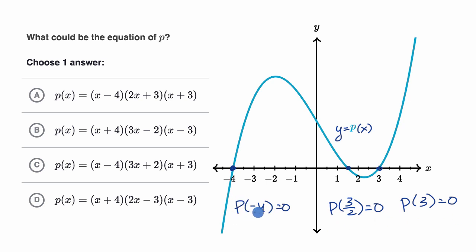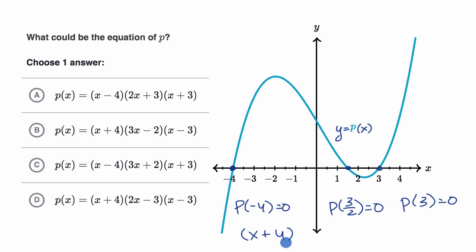In order for our polynomial to be equal to zero when x is equal to negative four, we probably want to have a term that has x plus four in it — a product that has x plus four in it — because x plus four is equal to zero when x is equal to negative four. We have an x plus four there, and we have an x plus four there. So I'm liking choices b and d so far.